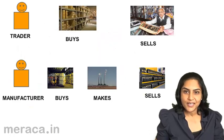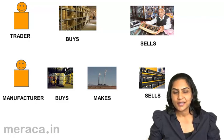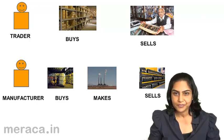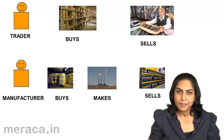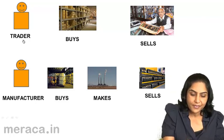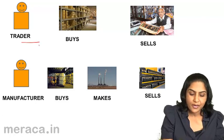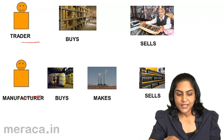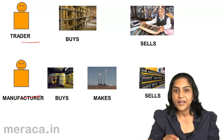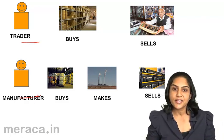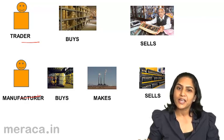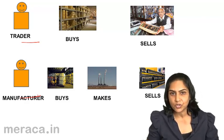Let us now understand the kinds of inventories we have in business. Broadly, we shall consider the business of a trader and the business of a manufacturer. Let us first consider the business of a trader. A trader buys goods and sells them without any further processing on the goods.